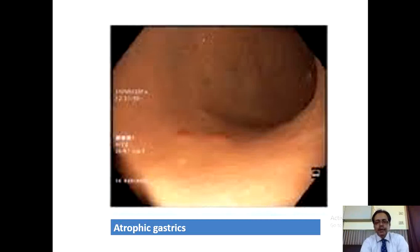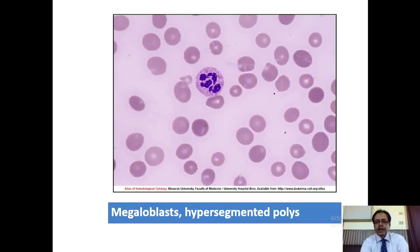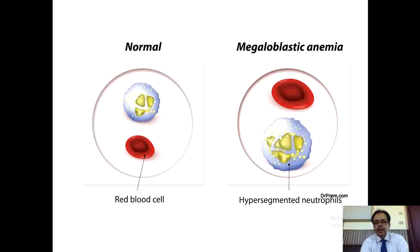On endoscopy, you can see atrophic gastritis. The megaloblast: the size of RBCs is larger, and WBCs have hypersegmented polymorphs with multiple nuclear lobes. On the left side you see normal RBC and WBC; on the right side you see the hypersegmented neutrophil which is found in megaloblastic anemia.